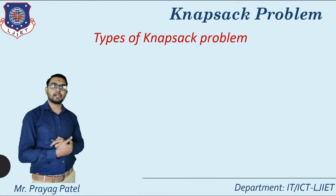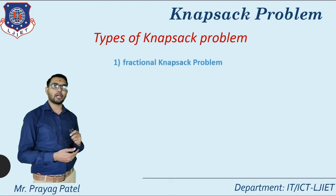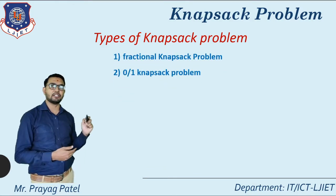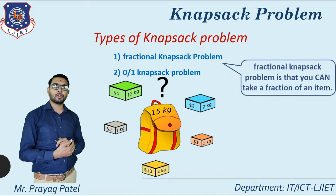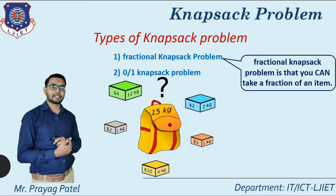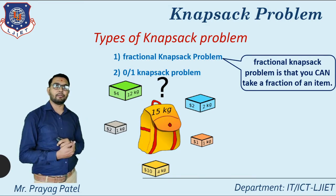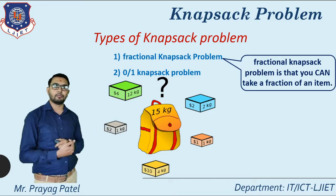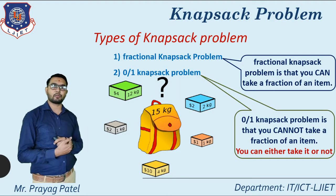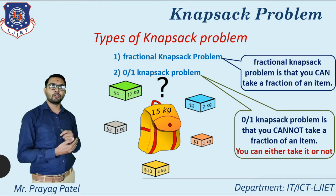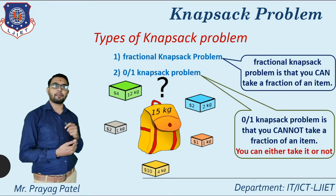Now consider the types of knapsack problem. There are two types: fractional knapsack problem and zero-one knapsack problem. In the fractional knapsack problem, you can take a fraction of an item — you can divide any object and select any part of it. In the zero-one knapsack problem, you cannot take a fraction of an item; you can either take it or not.